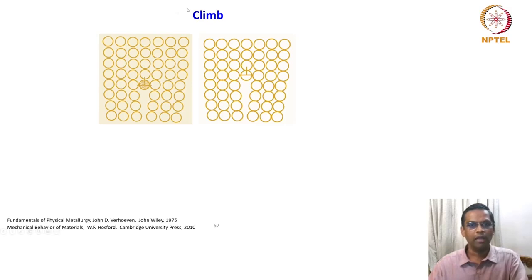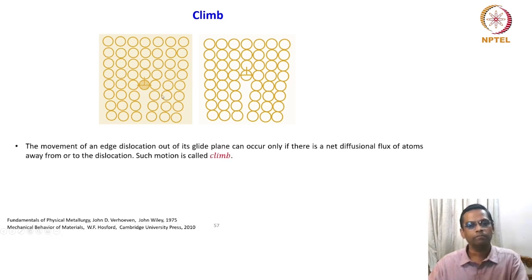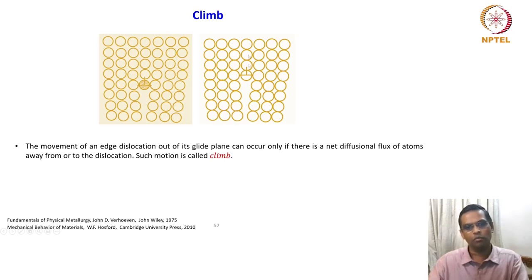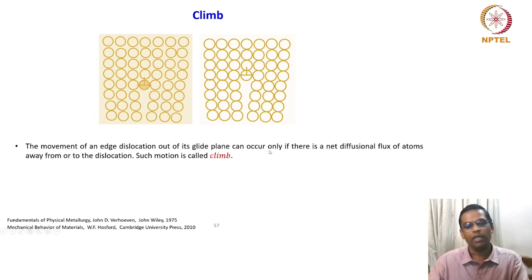Finally, we will talk about climb. We have already discussed this in terms of dislocation motion. The schematic shows the extra half plane — in one case it is extending downward, in the other case it is moving upward. There are two possibilities: either it can come down or go up. The movement of a dislocation out of its glide plane can occur only if there is a net diffusional flux of atoms away from or to the dislocation. Such motion is called climb.